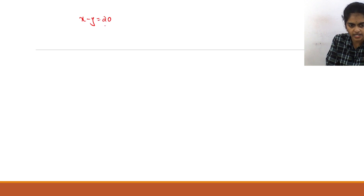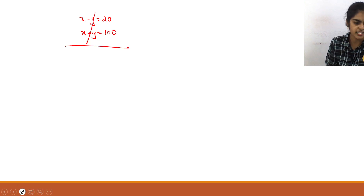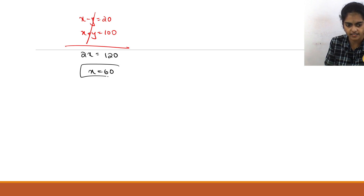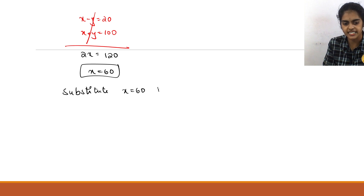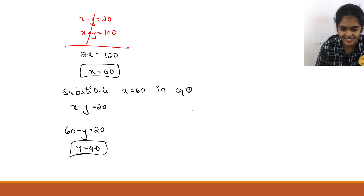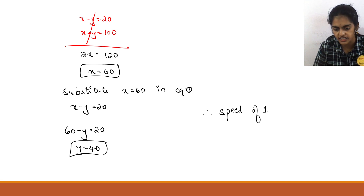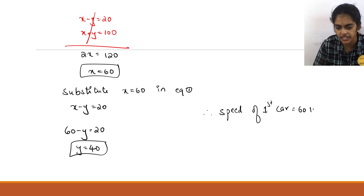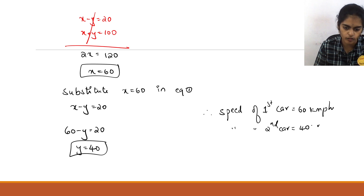Equation 1 is x − y = 20 and equation 2 is x + y = 100. Adding both: 2x = 120, so x = 60. Substituting x = 60 in equation 1: 60 − y = 20, so y = 60 − 20 = 40. Speed of first car is 60 km/h and speed of second car is 40 km/h. Don't forget to write the units.